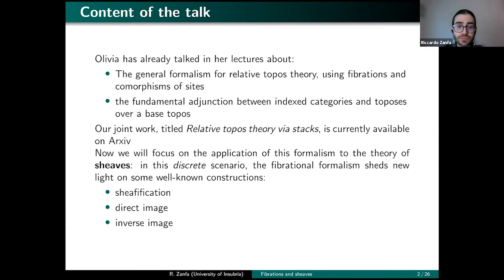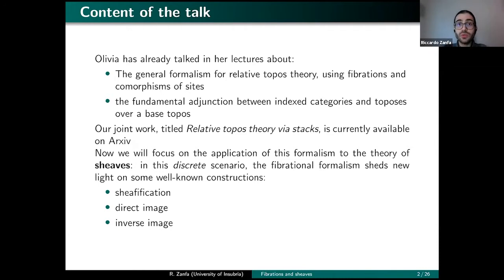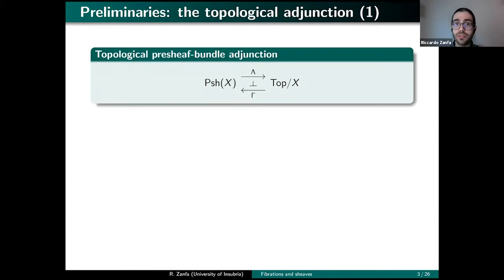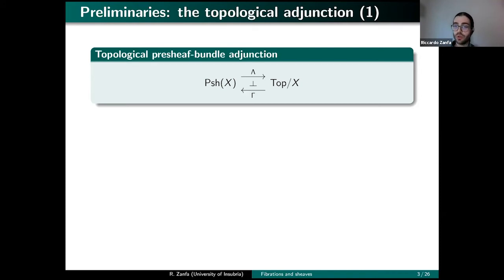I will start with sheafification. To find this fibrational description, we go through the fundamental adjunction — specifically how it reflects into the discrete environment. Before doing that, we must recall how the pre-sheaf bundle adjunction for topological spaces works. The discrete version of our fundamental adjunction is in fact a generalization of this pre-sheaf bundle adjunction.